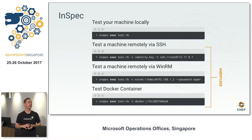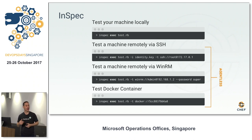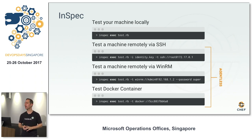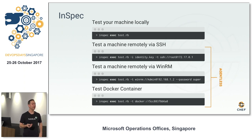InSpec works remotely. InSpec connects to machines via SSH for your Linux and Unix machines, running scripts remotely against them — you don't need an agent like Chef on those things. It also works with WinRM so you can connect to any Windows machine that has WinRM enabled — roughly 2008 and later. It will also connect to a Docker host and check the state of containers running on it for compliance. That's all completely agentless. You can also run it locally and check the state of the machine you're on.